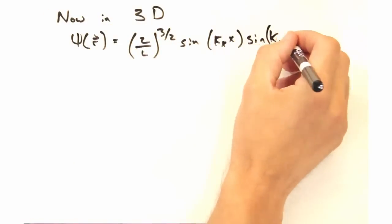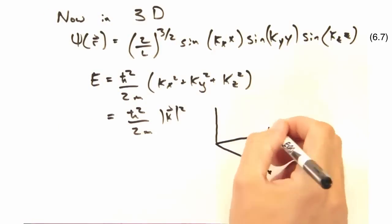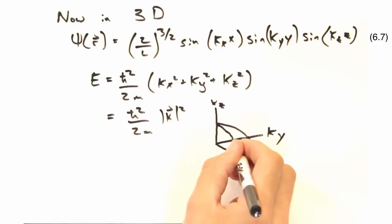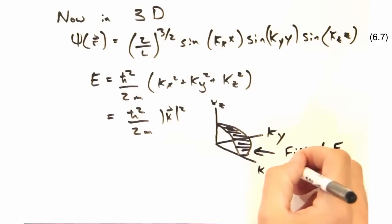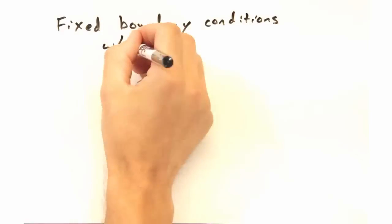Yeah, and a good way to visualize the dispersion is to look at the first quadrant. We can carve out these constant energy surfaces by using the magnitude of the k value, squared, as our radius, so we can make one eighth of a sphere. And with that, we're pretty much done with the fixed boundary conditions.